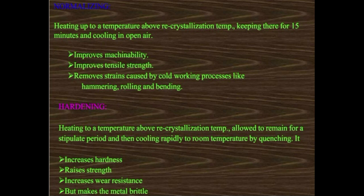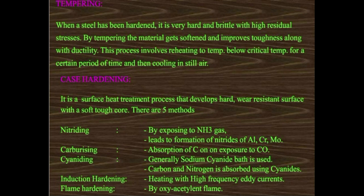Hardening: heating to a temperature above the recrystallization temperature, holding for the required period, then cooling rapidly to room temperature by quenching. Hardening increases hardness and strength and improves wear resistance, but it also makes the metal brittle. Tempering: when steel has been hardened it becomes very brittle with high residual stress. By tempering after hardening, the metal softens and toughness and ductility are improved. This involves reheating to a temperature below the critical temperature for a certain period and then cooling.